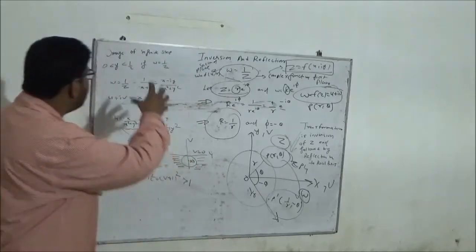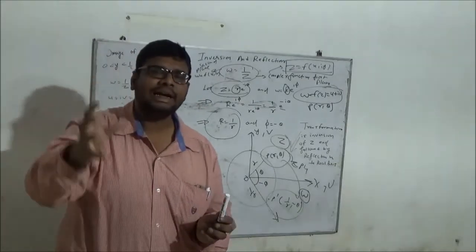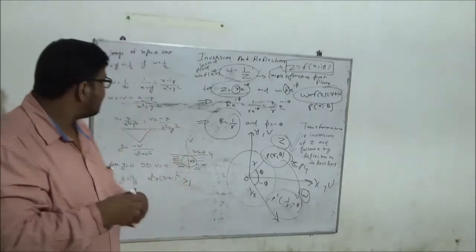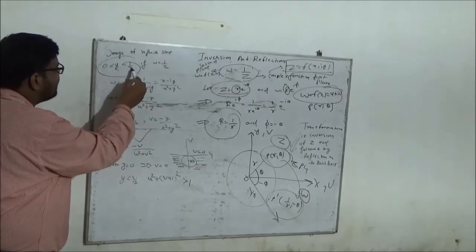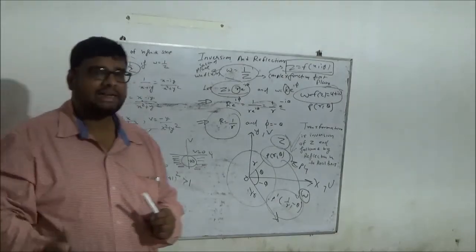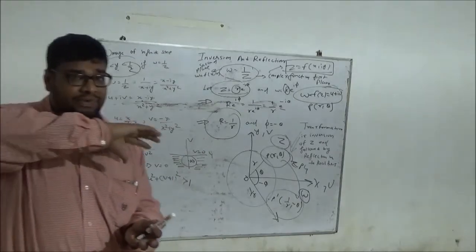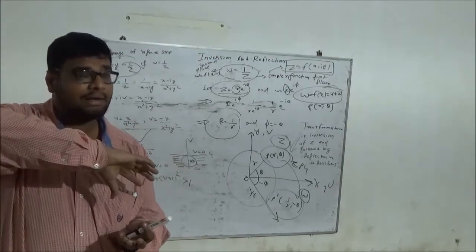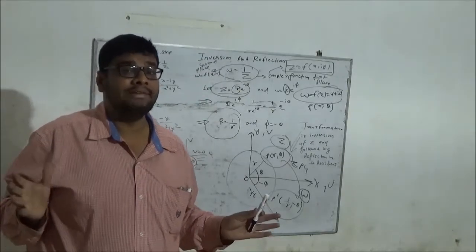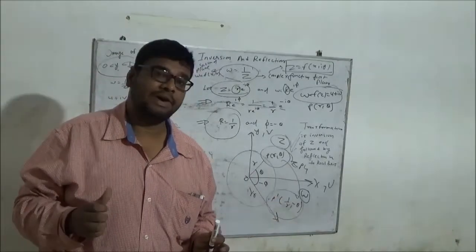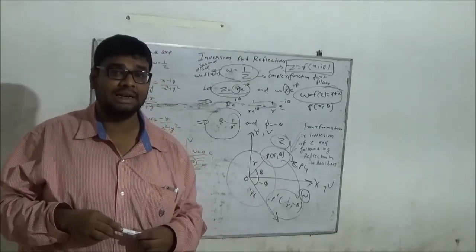Now I am considering a numerical example. Let's suppose we have given an infinite strip of dimension 0 < y < 1/2. If we apply the relation w = 1/z to this infinite strip, then what properties and what transformation will we see on the infinite strip? Let's see.